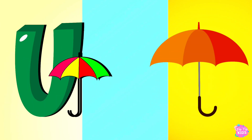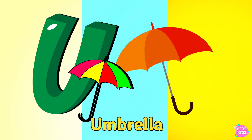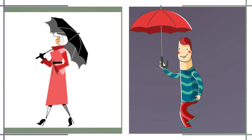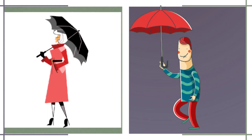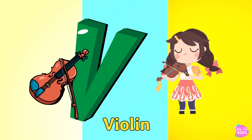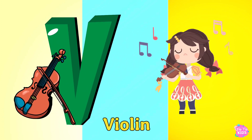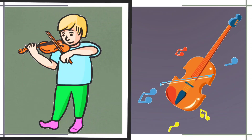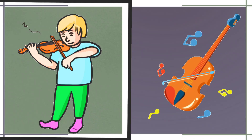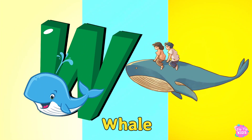U is for Umbrella. U, Umbrella, U. Umbrella, U. Umbrella. V is for Violin. V, Violin, V. Violin.